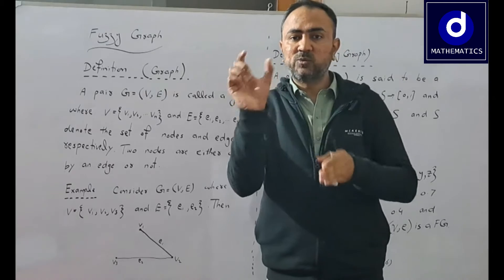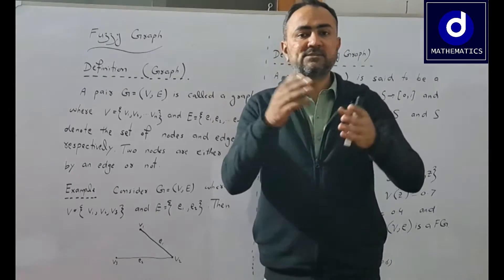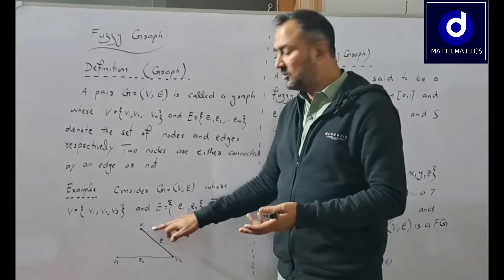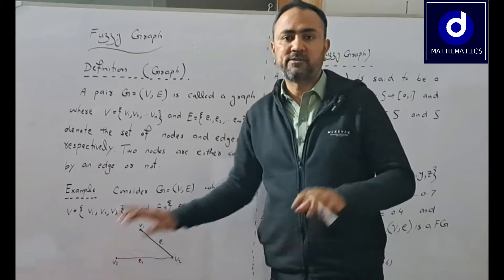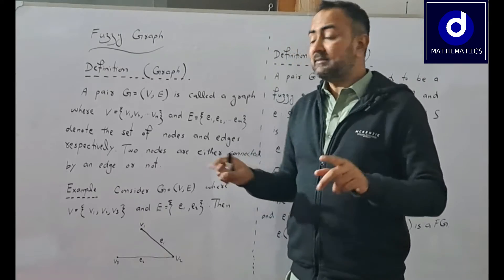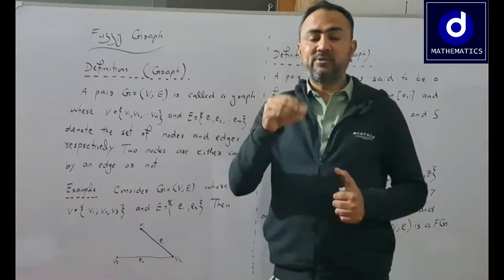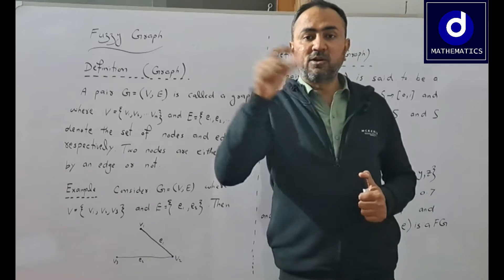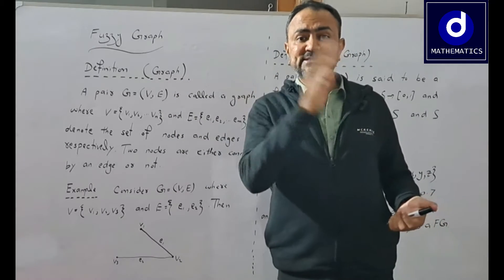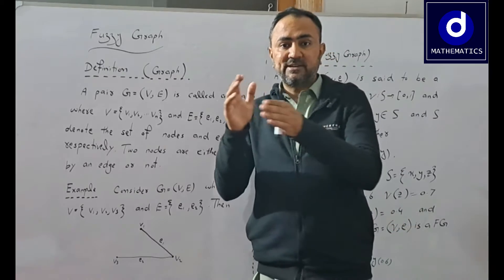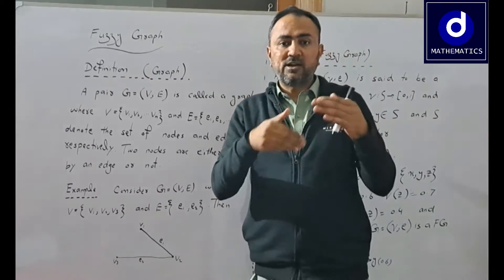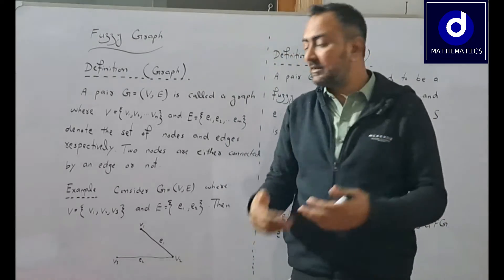In a crisp graph there are only two possibilities: either there is an edge between two vertices or there is not. This is similar to crisp set theory where an element either belongs to a set or it doesn't — only two possibilities. But in fuzzy set theory, which is a generalized notion of crisp sets, we have a lot more flexibility.